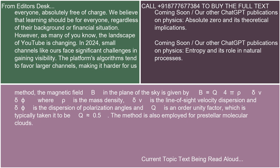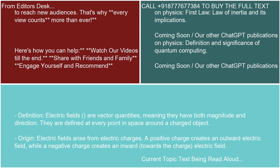An electric field is a region around an electrically charged object or particle within which a force would be exerted on other charged objects or particles. The electric field at a point in space is defined as the force per unit charge that would be experienced by a small positive test charge placed at that point. Electric fields are vector quantities, meaning they have both magnitude and direction, and are defined at every point in space around a charged object.